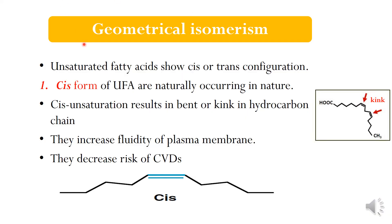Now there is geometrical isomerism — unsaturated fatty acids may show cis or trans configuration. The cis form of unsaturated fatty acids, whether it is MUFA or PUFA, are naturally occurring. Cis unsaturation results in a bent or kink in the hydrocarbon chain. They increase fluidity of the plasma membrane and decrease the risk of cardiovascular diseases.